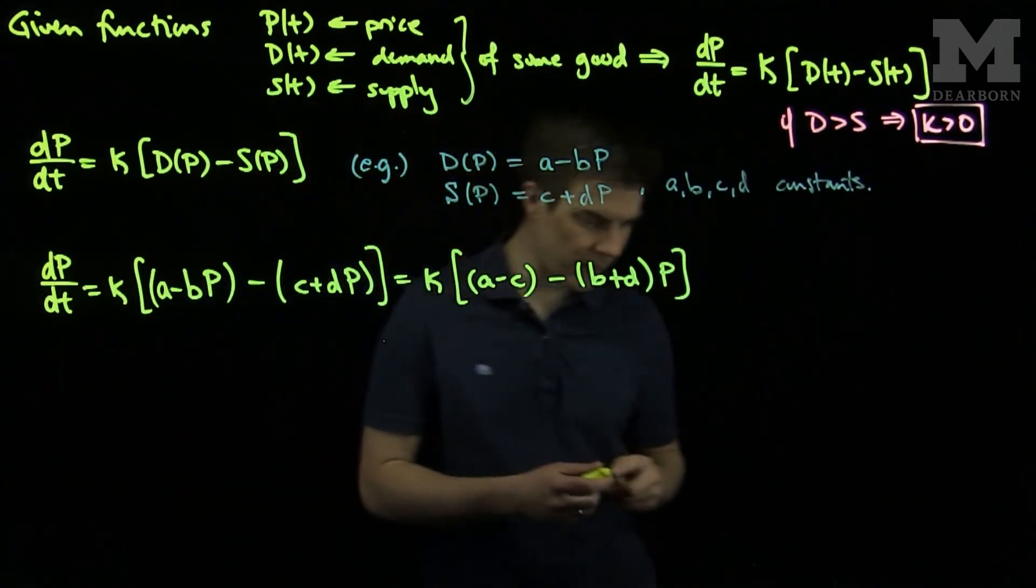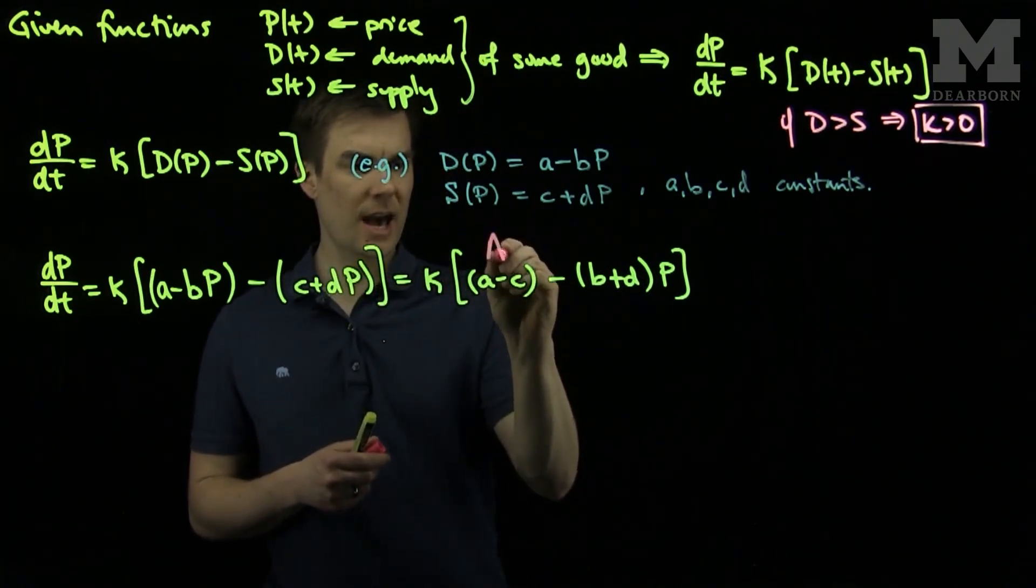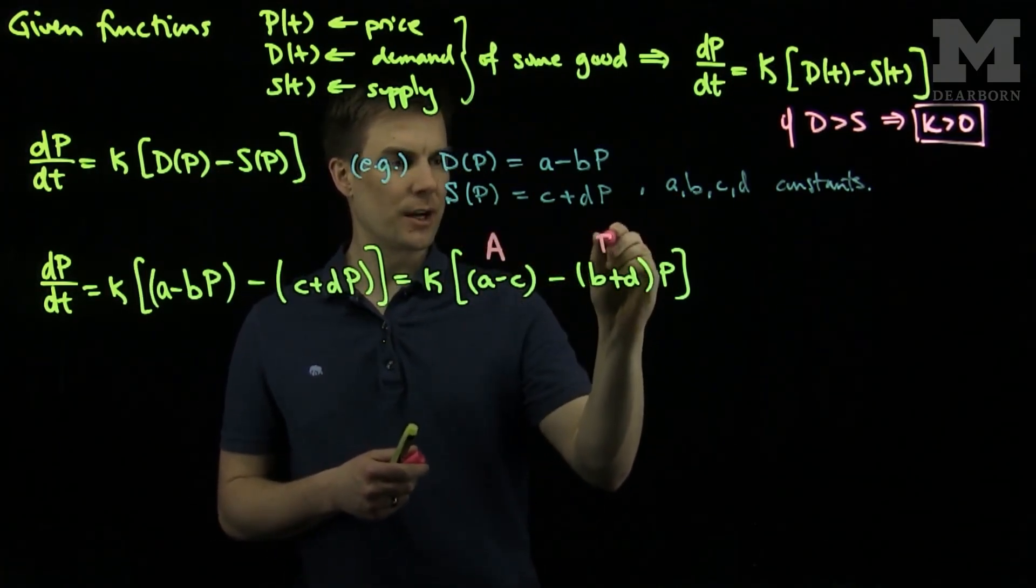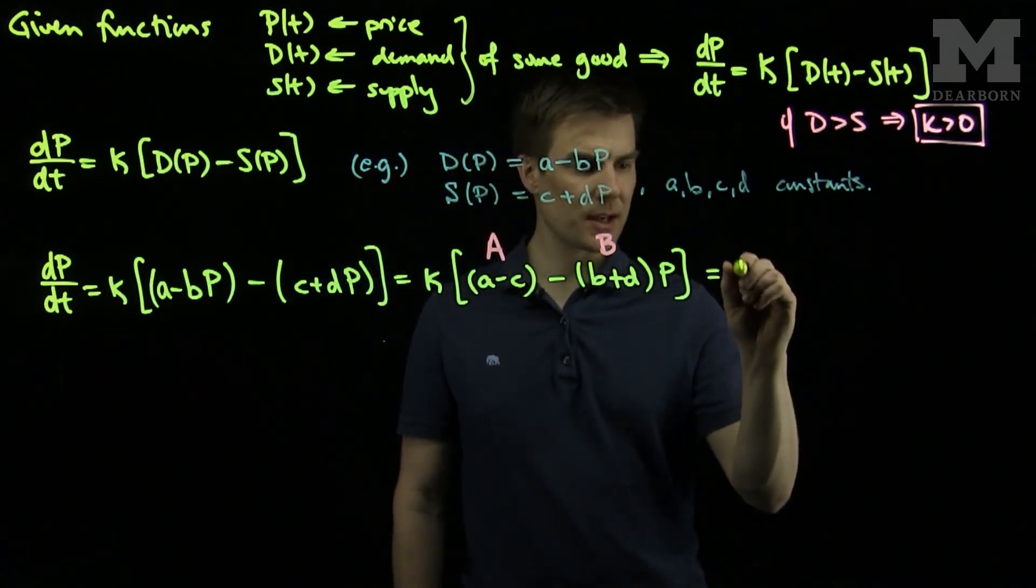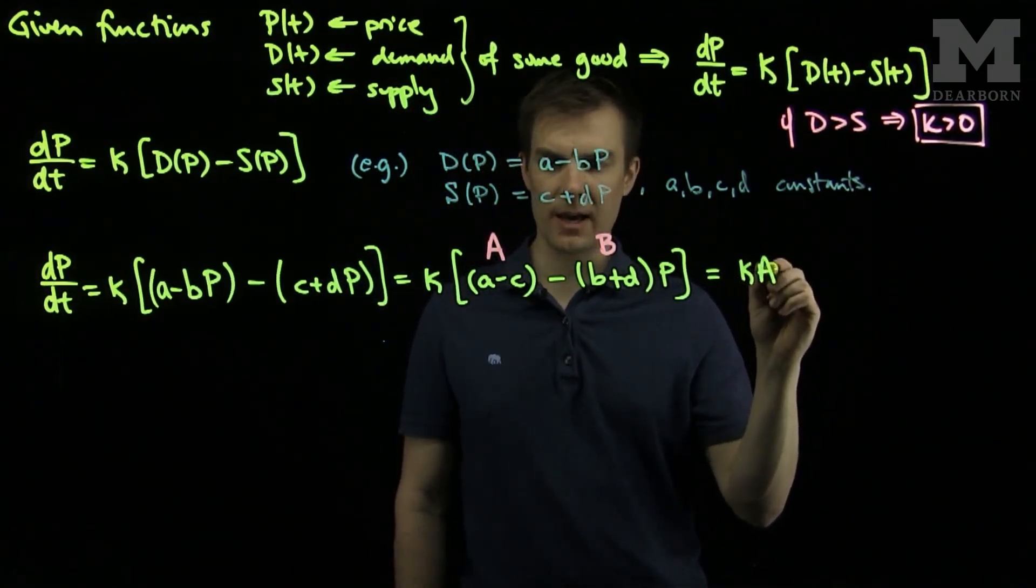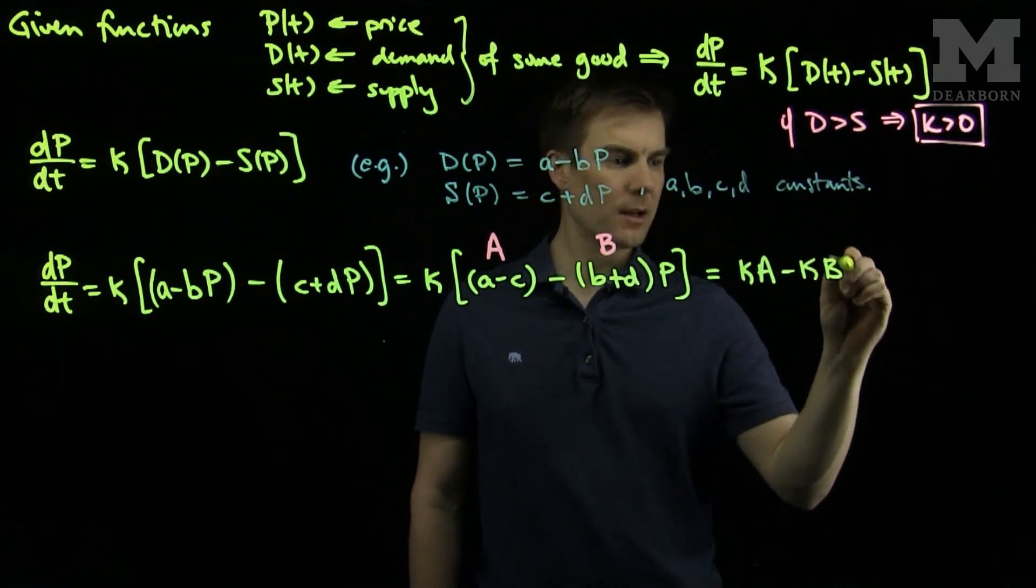Now, we notice over here, let's simplify the problem by making some notation. So I'm going to call this parameter over here capital A, and this parameter over here capital B. So with this notational change, we will write this as K times capital A, minus K times capital B, times p.